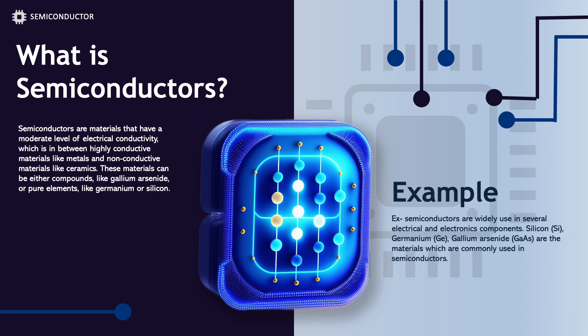Example: Semiconductors are widely used in several electrical and electronics components. Silicon, germanium, gallium arsenide, and gallium arsenide variants are the materials which are commonly used in semiconductors.